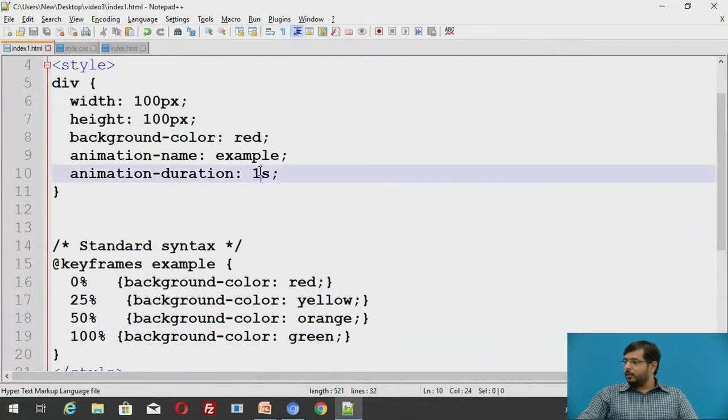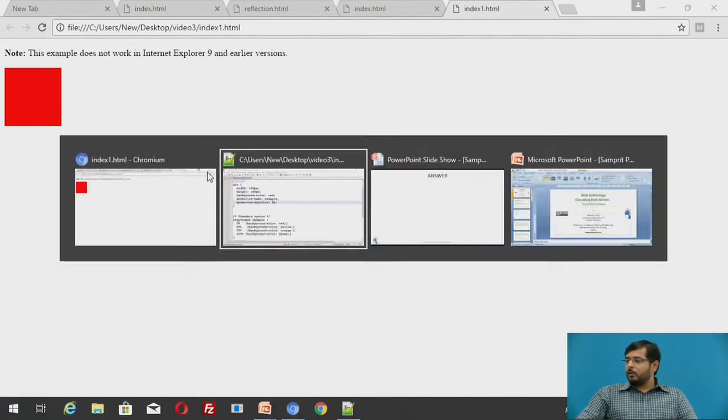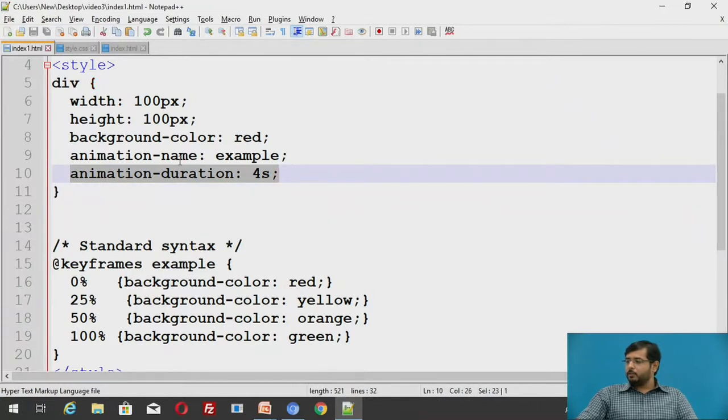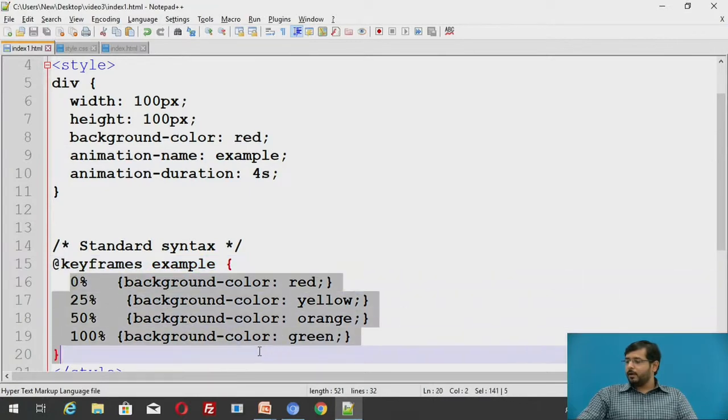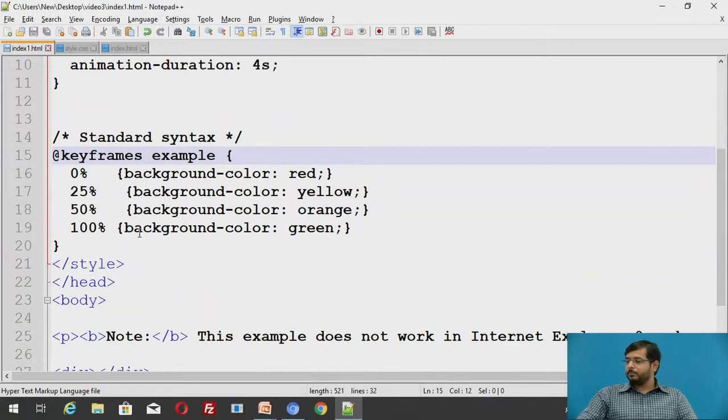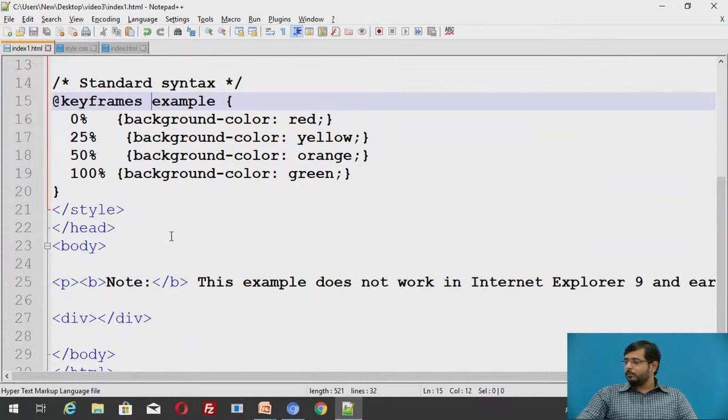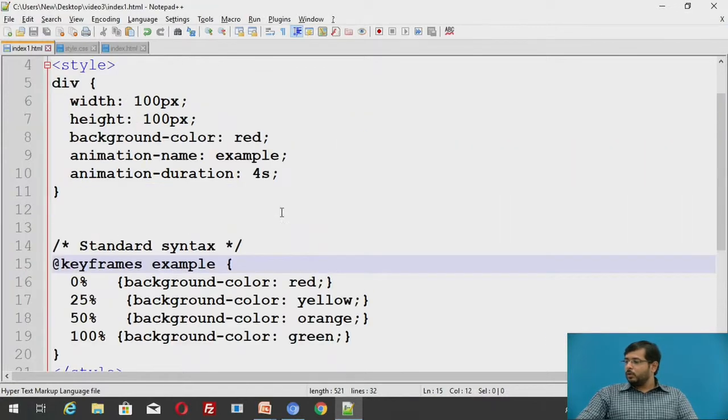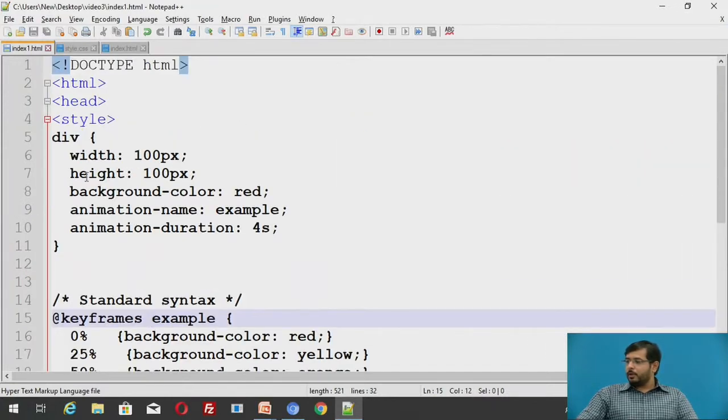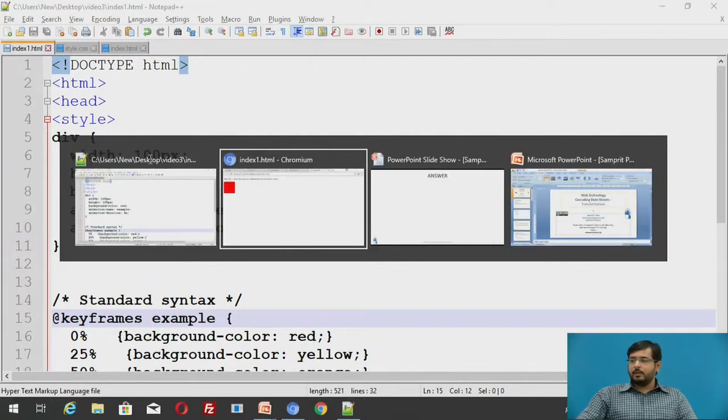We will just increase the duration. We will give it as 4 seconds so you can understand when the color is changing. Now the color is changing with a slow speed. This is the particular animation duration I was speaking about. The animation name is example because the keyframe or the animation that we have defined is in the keyframe example. This is the particular example for 2D transformations and animation.